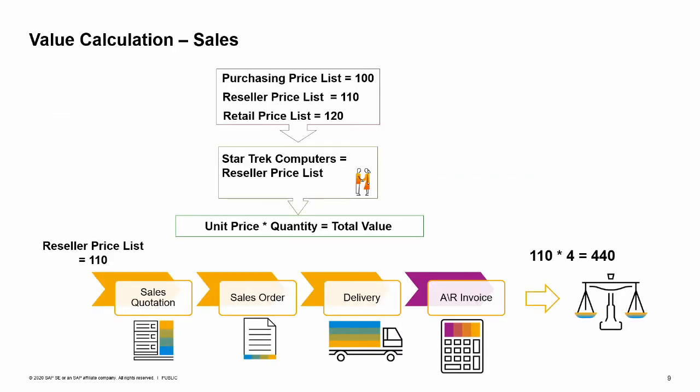Here is a common scenario of how prices are set in SAP Business One during the sales process. Note: in the following slides we assume that no special prices or discounts were defined for the involved items and business partners. Our customer Star Trek Computers asks for an offer on four portable media players. Jean creates a sales quotation. She chooses the customer and then the item. The item master data includes three optional prices for this item, each represented in a different price list. Star Trek Computers is a reseller customer, so its default price list as defined in its master data record is the reseller price list. Therefore, in the sales quotation, the unit price for a portable media player is 110, the price from the reseller's price list.